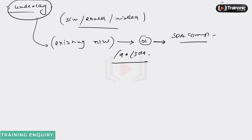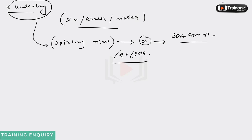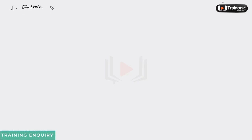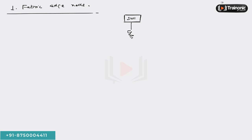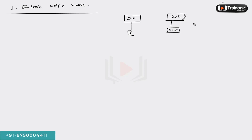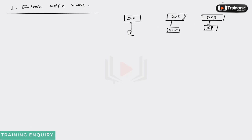These devices are going to be assigned different roles in the SDA fabric. There are three major types of devices. The first is the fabric edge node. The fabric edge node is typically a switch that connects to endpoints — this could be a PC, a server, a wireless access point, or anything like that. Any device that connects to an endpoint is called the fabric edge node — similar to access layer switches in traditional networking.